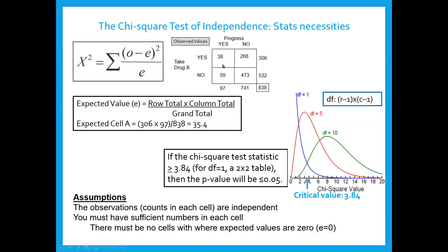The observed value for cell A would be 38. The expected value is calculated by multiplying the row total and the column total and dividing by the grand total — so for cell A you multiply 306 × 97 and divide by 838, giving 35.4. You plug in: 38 minus 35.4, square it, divide by 35.4. Do this for each cell, sum them up, and that is your chi-square statistic.